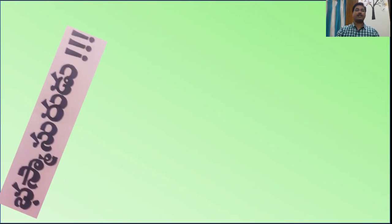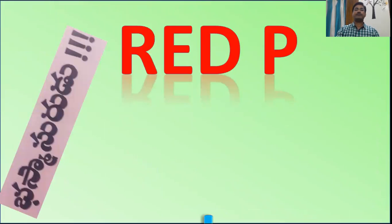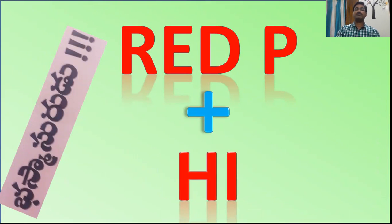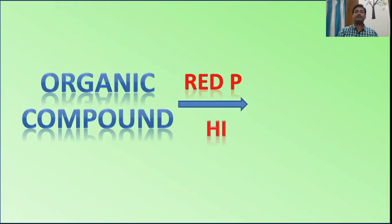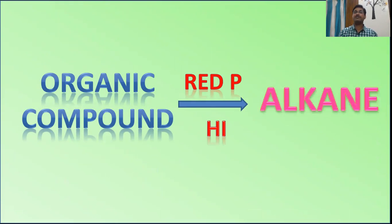This reagent is nothing but red phosphorus in hydrogen iodide — that is the mixture of these two compounds. Hydrogen iodide in the presence of red phosphorus always produces nascent hydrogen. When an organic compound is treated with this reagent — the mixture of hydrogen iodide and red phosphorus — it converts into the corresponding alkane. This is a very useful reagent for learning conversions.